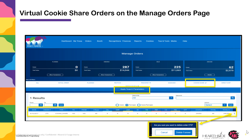You can also see the dollar amount associated with that order. By clicking the ellipse at the end of the row, you can either edit the order or delete if needed.